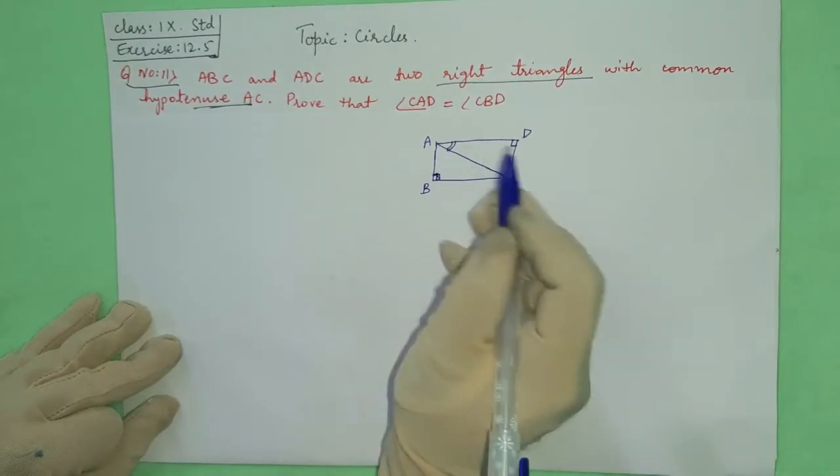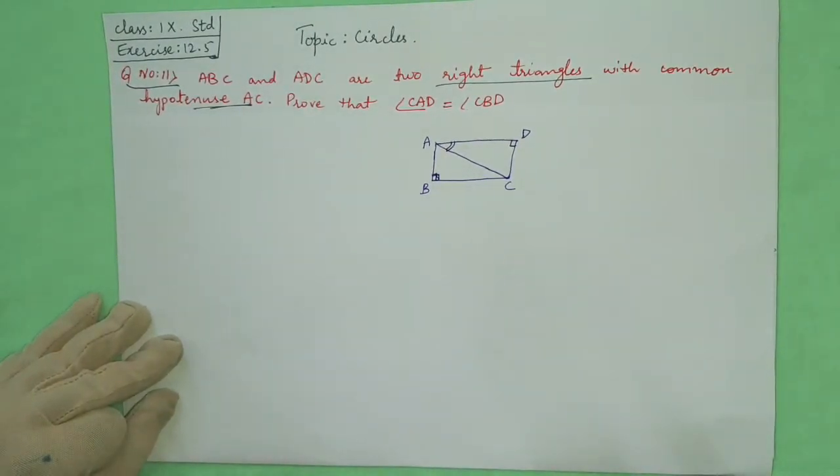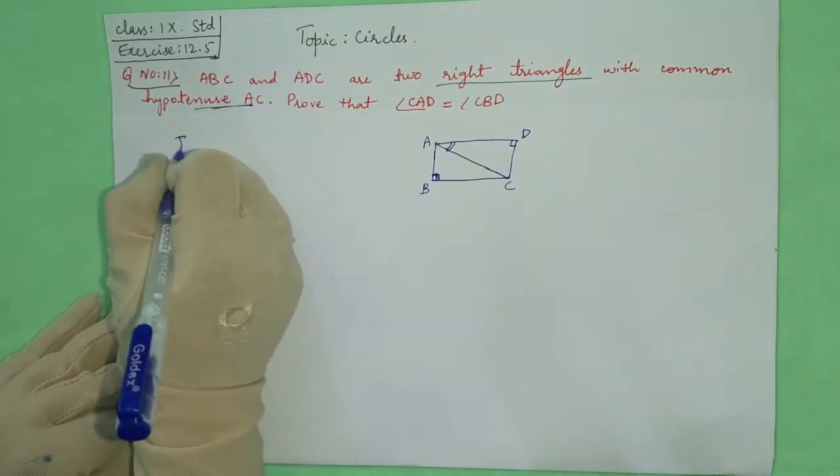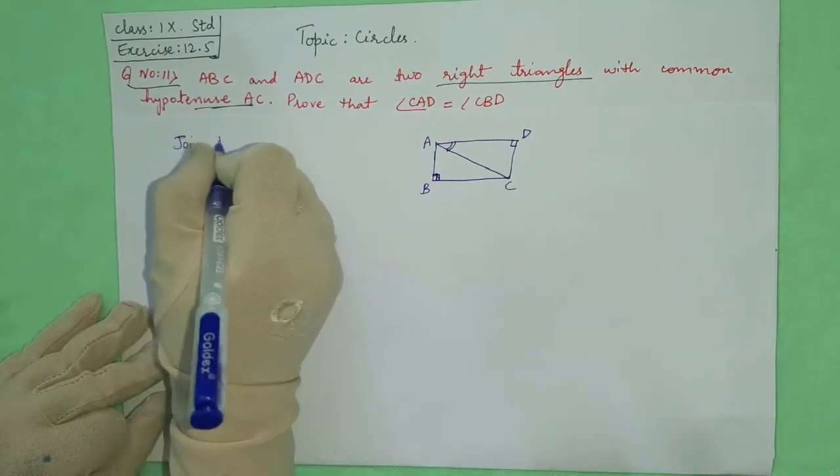This angle CAD is equal to CBD. If we have CBD angle here, what we will do? We will join BD.